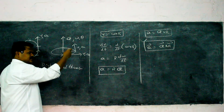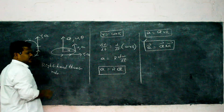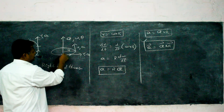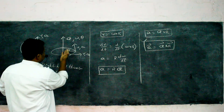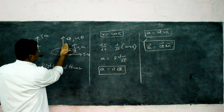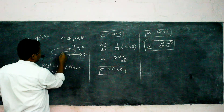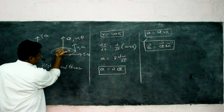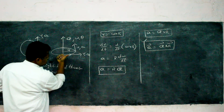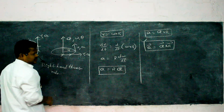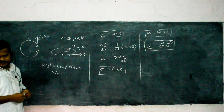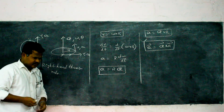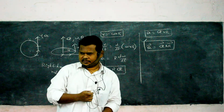The acceleration vector is perpendicular to the radius and inside the board. If you consider this as the radius, alpha cross R gives the direction of velocity and acceleration along the tangent.